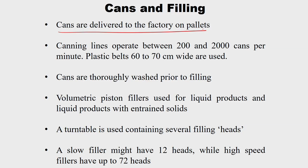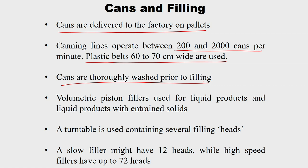Not all vegetables, fruits, or formulated products follow the same protocol to prepare for canning — it depends on the product, size, shape, color, and the process to be employed. So we cannot generalize a single flowchart to be followed before canning. Cans are usually delivered to the factory on pallets. Can lines operate between 200 to 2000 cans per minute, with plastic belts of 60 to 70 cm wide to transfer cans. Cans are thoroughly washed and inverted to remove all water before filling.